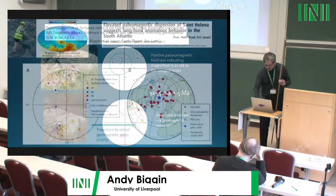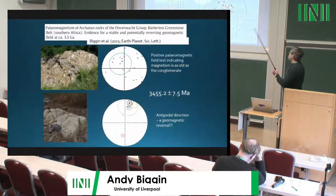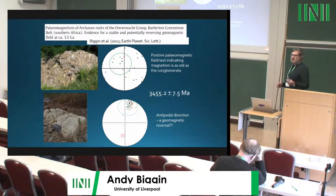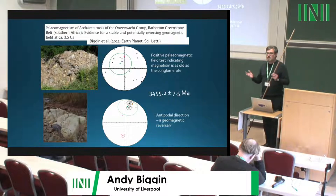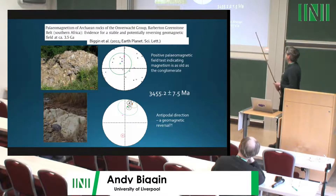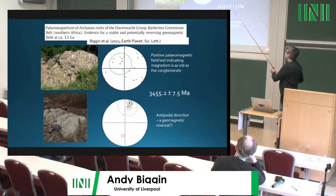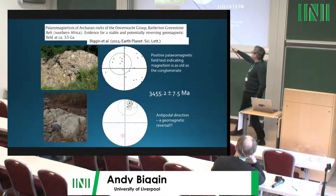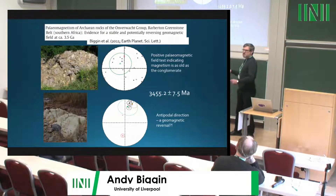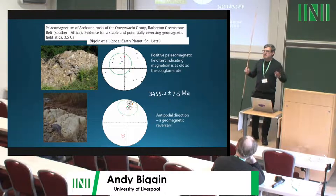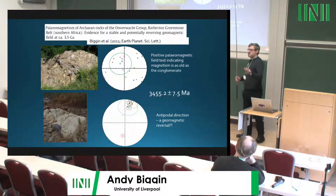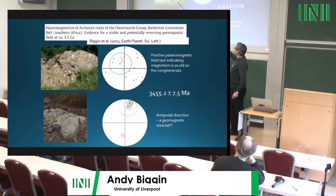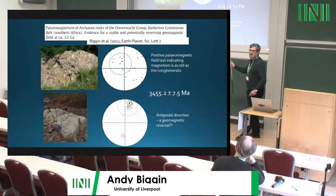I want to provide what I consider some of the strongest evidence that the dynamo was up and running and producing a field not wholly dissimilar to today's, 3.5 billion years ago. What you see here are small boulders and pebbles of volcanic material incorporated, presumably through a dramatic flood event, into a conglomerate bed.